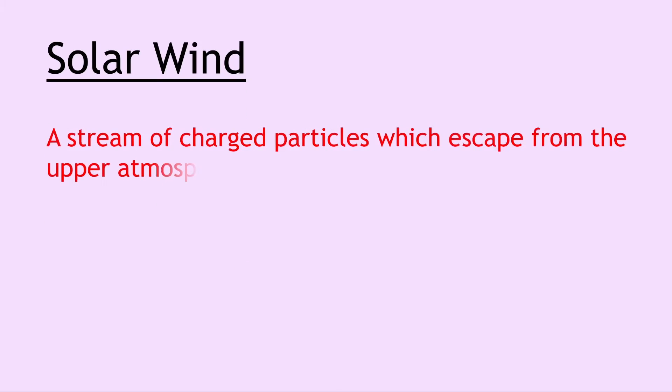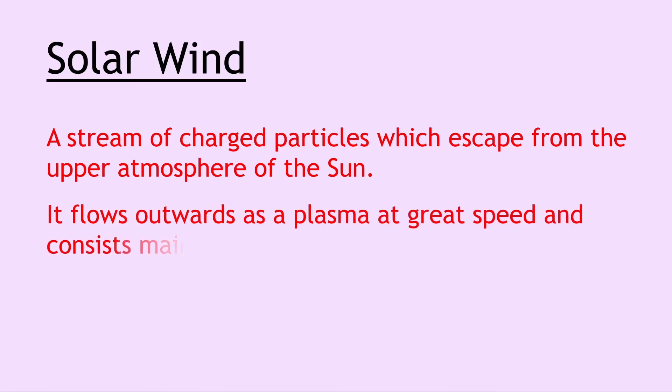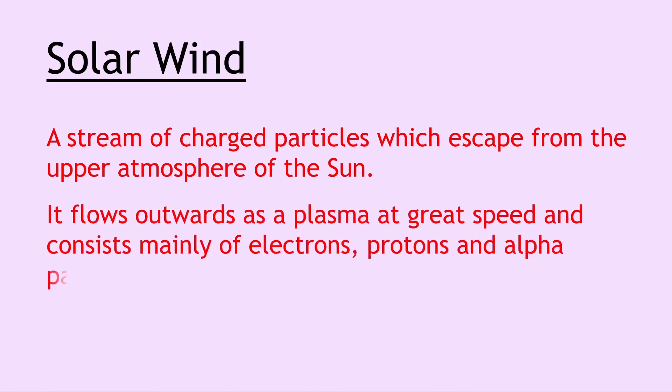Moving on, we have the solar wind, and this is a stream of charged particles which escape from the upper atmosphere of the Sun. It flows outwards as a plasma at great speed and consists mainly of electrons, protons and alpha particles.